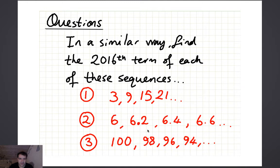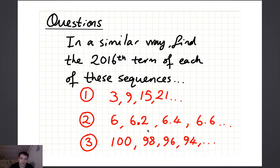Now some questions. In a similar way, find the 2,016th term of each of these sequences: the one that starts 3, 9, 15, 21; then the one that starts 6, 6.2, 6.4, 6.6; and then the one that starts 100, 98, 96, 94. Find the 2,016th term of each of those. Pause the video if you haven't done that yet.